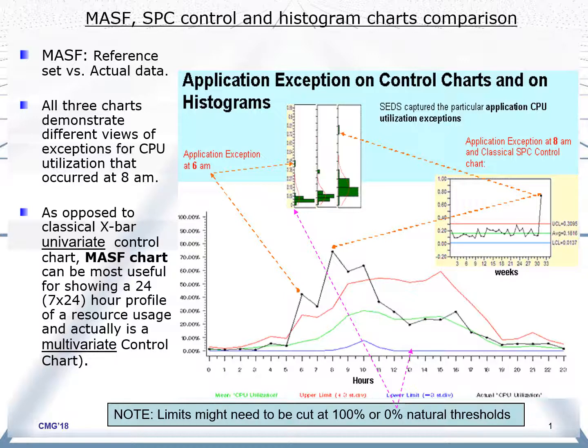Let's focus on the picture. The picture is based on real data captured by the Sets tool for some application's CPU utilization. The y-axis is CPU utilization from 0 to 100, and the x-axis is from 0 to 23, representing 24 hours for a particular day — Sunday.